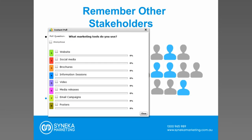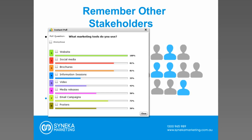The options are: website — do you currently use your website as a marketing tool? Social media, brochures, information sessions — and if you are using information sessions perhaps you can elaborate on that. Video, which is obviously becoming a lot more common in today's world. Media releases, email campaigns, and even posters — maybe you are still using posters outside as well.